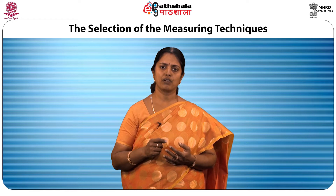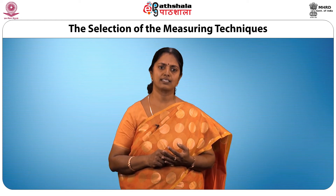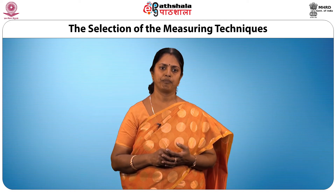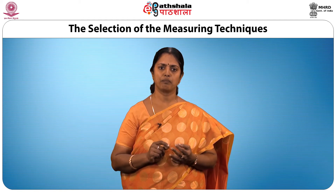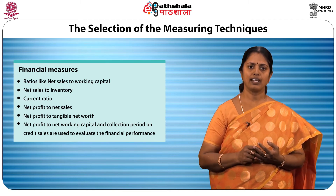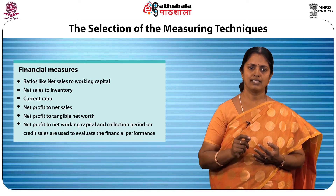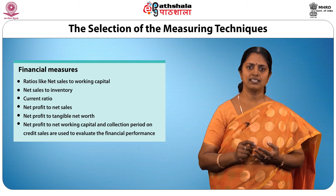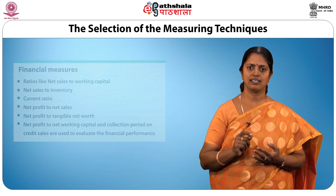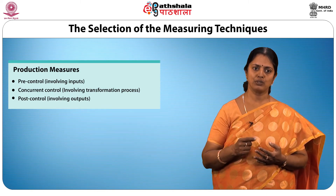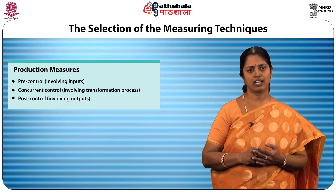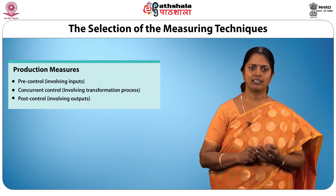The third step in the strategic control process is the selection of measuring techniques. One of the most difficult tasks is selecting an appropriate measure. For financial measures, ratios used include net sales to working capital, net sales to inventory, current ratio, net profit to net sales, net profit to tangible net worth, net profit to net working capital, and collection period on credit sales. For production measures, there are three broad categories of control: pre-control, concurrent control, and post-control.